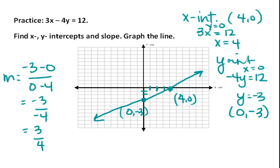You could check this. If we went with our y intercept, we should be able to go up 3—1, 2, 3—over 4, and hit the line. And we do, we hit our x intercept. And that's how to graph a line in standard form.